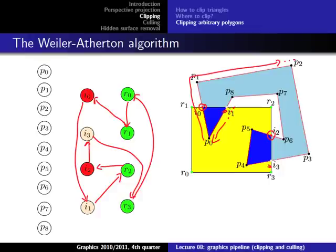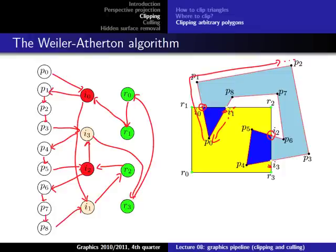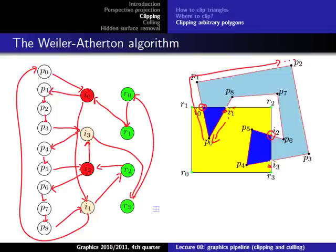Now let's add the edges from walking along the polygon. Starting at P0, we come to I0 — which is an outgoing intersection — then P1, then P2, P3, then I3. From I3 we go to P4, P5, then across I2, then P6, P7, P8, and then to I1. From I1 we come back to P0.